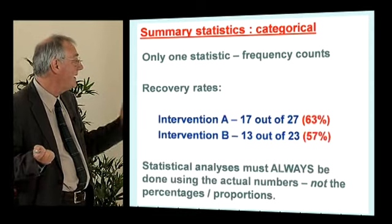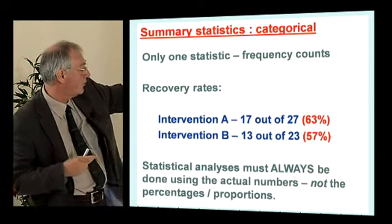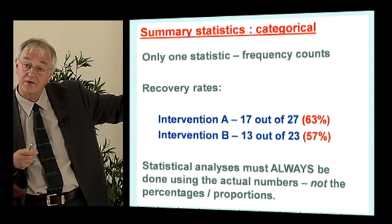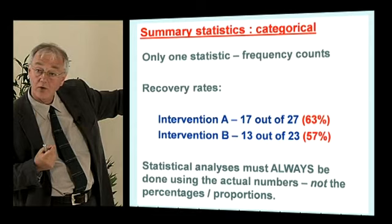Let's go back and start going through the algorithm. The first thing we do is summarize data. For categorical data, it's easy — we just calculate the frequency count. It gets more complicated when the numbers in the two groups are not equal. What we do is convert the actual frequency count into percentages to make it interpretable. We only do that for presentation. MCQ questions have tried to trick you into believing you do the analysis on percentages — you don't. The analysis must be done on the numbers, not the percentages.